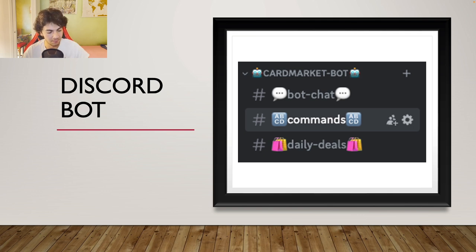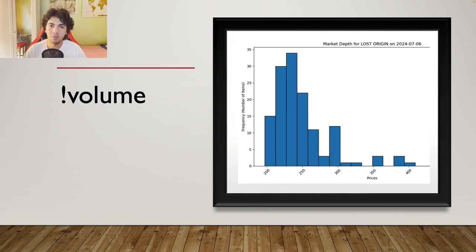Without wasting too much time, what am I talking about? Number one, the volume function. What does it do? As you can see here, it says market depth for Lost Origin. This is kind of where the boxes are, where the boxes stand.